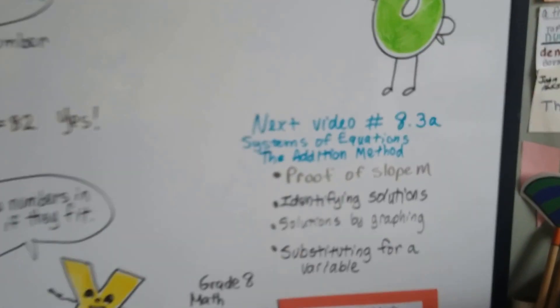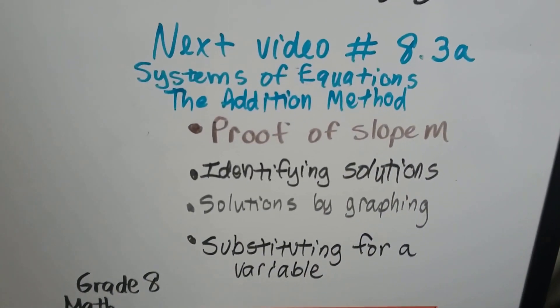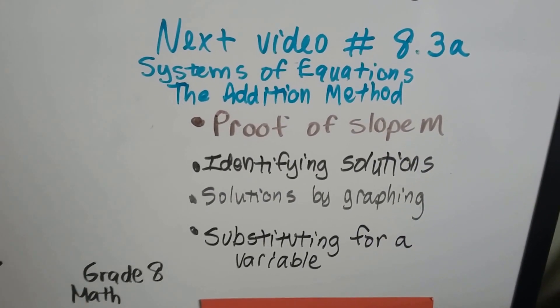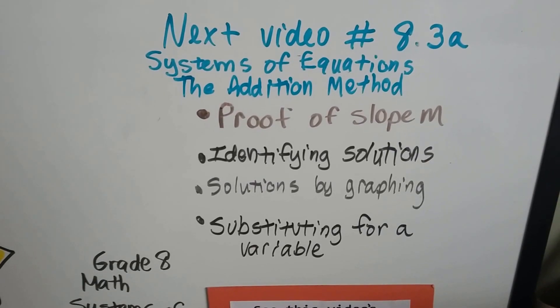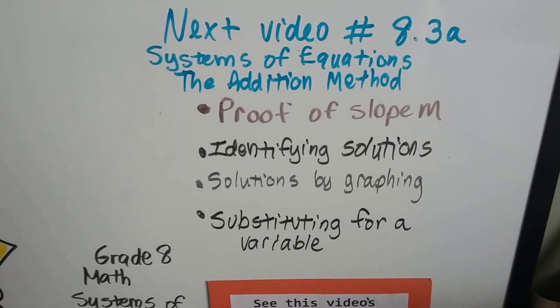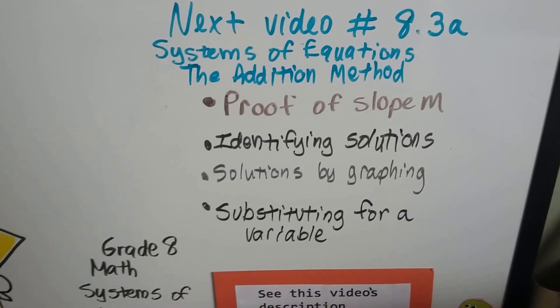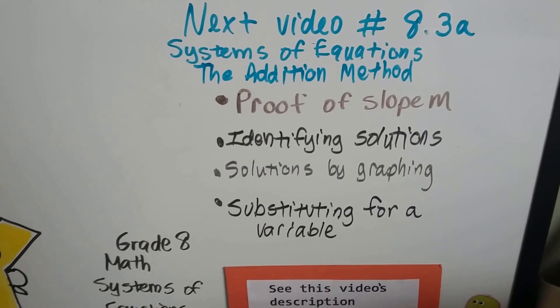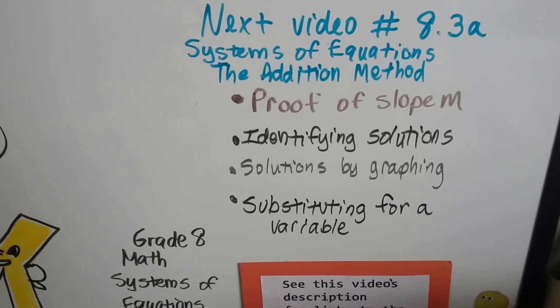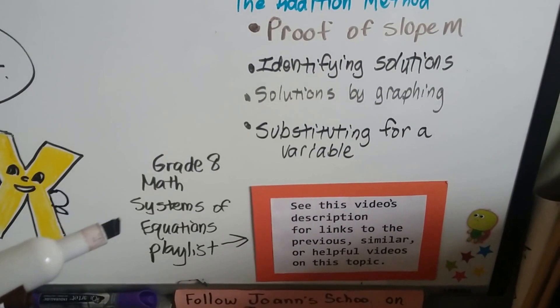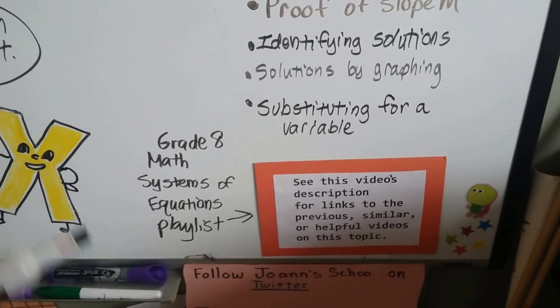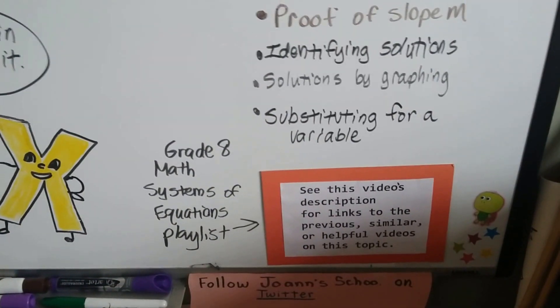Our next video, 8.3a, we're going to continue talking about systems of equations. And we're going to talk about the addition method for solving them. If you want to go back to watch about how we did the proof of slope m, or identifying solutions, or solutions by graphing, or substituting for a variable. That's what this one was all about. That was our previous video, 8.2a. And I'm going to put a link for the grade 8 math systems of equations playlist, because that covers all of this too. So all of these links are going to be in the description of this video to help you out, so you can just click on them. Okay?